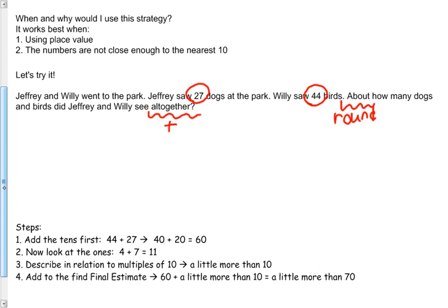I have our steps written down for us and I'm going to do them again as we go through. So we have 44 plus 27. Front-end estimation means that we split these numbers into their place values. So the four is in the tens place so that's 40, and the 2 in 27 means 20. So 40 plus 20 equals 60.